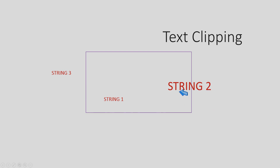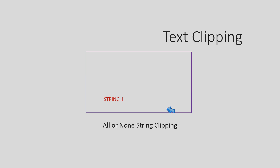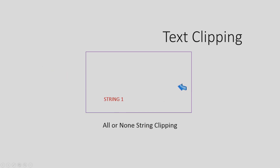Calculations are involved only in the case of string two. The first kind is all-or-none string clipping. In this form, the string which is completely inside the window is accepted, the string which is completely outside — for example string three — is rejected, and the string which has a clash with the window boundary and is partially inside the window is also rejected as a whole.